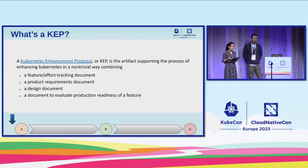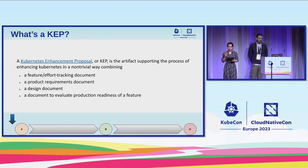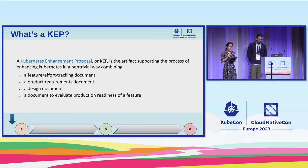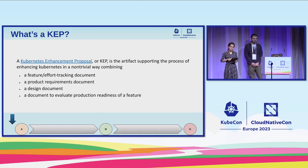KEP stands for Kubernetes Enhancement Proposal. It's a design document that captures the proposed changes and the proposed solution for that change. It includes a detailed description of the change, the rationale behind the change, the design, implementation plan, as well as production readiness of the feature. It has to be reviewed by the sponsoring SIG and at times another SIG that is collaborating on that particular feature.